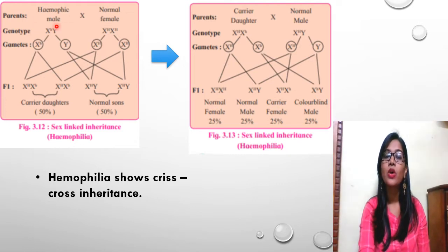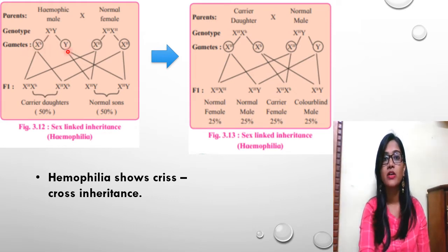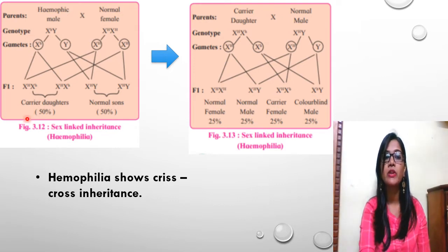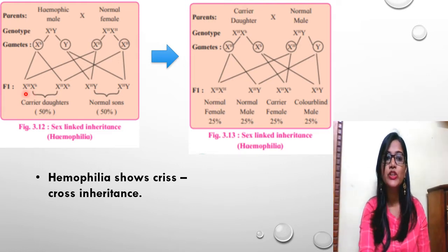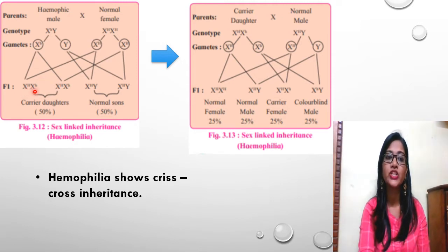Talking about the Haemophilic male: when a male has Haemophilia, his X chromosome carries the recessive gene — X with small h. His gametes are X with small h and Y sperm. In the F1 generation, there are 50% chances that daughters will be carriers, meaning they have both capital H from the mother and small h from the father — so the daughter is X capital H, X small h: a carrier.